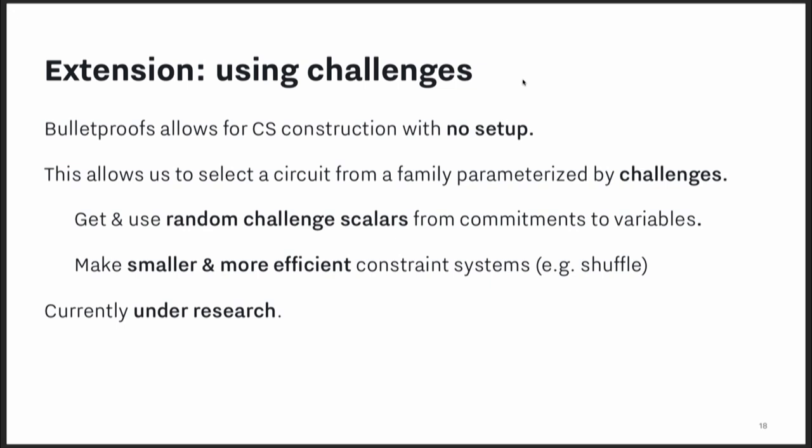One interesting extension we came up with over the constraint system proof is a way to use challenges. Unlike other zero-knowledge proof protocols, Bulletproofs requires no trusted setup. This means you can actually select a circuit from a family parametrized by challenges — you can get and use random challenge scalars that come from your commitments to the secrets. This allows us to have semi-interactive zero-knowledge proofs, which allows for smaller and more efficient constraint systems. This is currently under research.